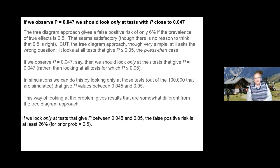This approach gives a different answer from the tree diagram approach. If you look at only tests that give p-values between 0.045 and 0.05, the false positive risk turns out to be not 6% but at least 26%. I say at least because that assumes a prior probability of there being a real effect of 50/50.